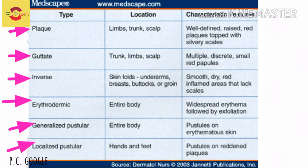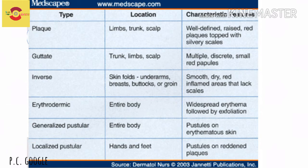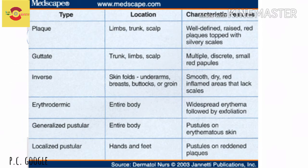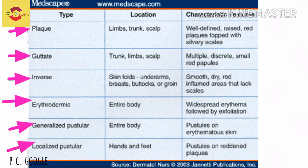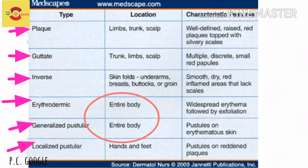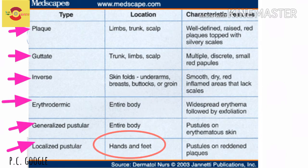In broad terms, there are six types of psoriasis: plaque, guttate, inverse, erythrodermic, generalized pustular, and localized pustular. Plaque and guttate affect limbs, trunk, and scalp — limbs predominate in plaque and trunk in guttate. Inverse involves skin folds such as underarms and breasts. Erythrodermic and generalized pustular involve the entire body, while localized pustular involves the hands and feet.